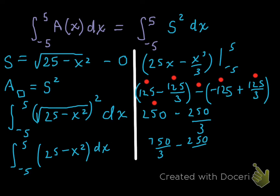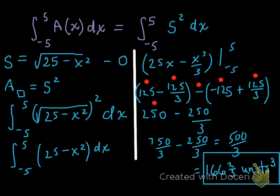which lands me on 500 over three or 166 and two-thirds units cubed for the volume of this shape, which is a bunch of squares added up from negative five to five with size dictated by the curve root 25 minus x squared. Hope that makes sense to you.